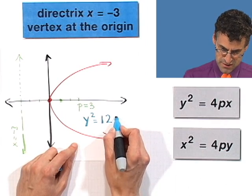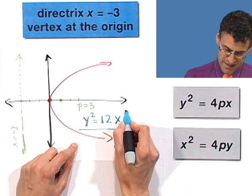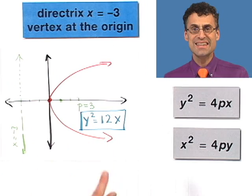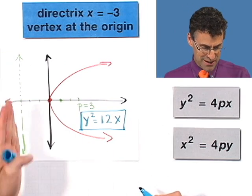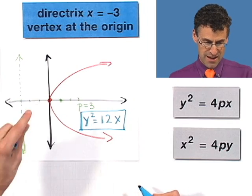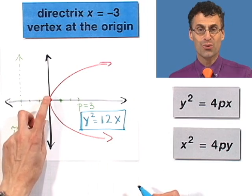It's y squared equals 4 times 3, which is 12x. Check it out. There's the answer.